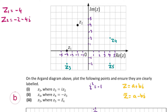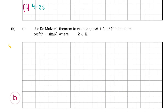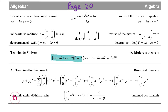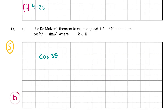That's the answer for part a. Now we look at part b, and part b1 is worth five marks. It says: use De Moivre's theorem to express (cosθ + i sinθ)³ in the form cos kθ + i sin kθ, where k is a real number. On page 20 of our formula and tables book, De Moivre's theorem states that (cosθ + i sinθ)ⁿ equals cos nθ + i sin nθ. In our case n is 3, so the answer is cos 3θ + i sin 3θ.